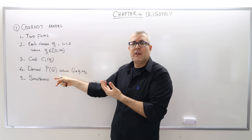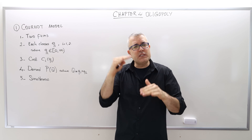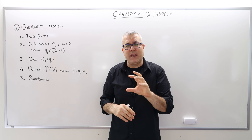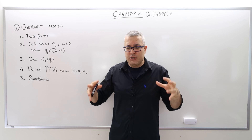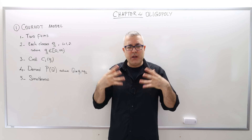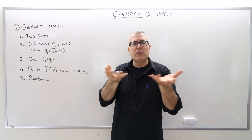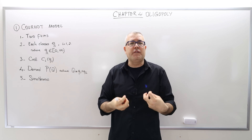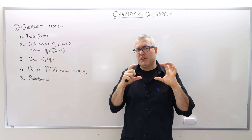Once quantities are chosen, they're revealed to the market. Given total demand, the demand curve determines the price, and both firms charge that same price. There is no competition in terms of pricing — only in quantities. The timing is simultaneous and independent: both firms choose quantities at the same time, and then the game is over. This is a one-shot game.